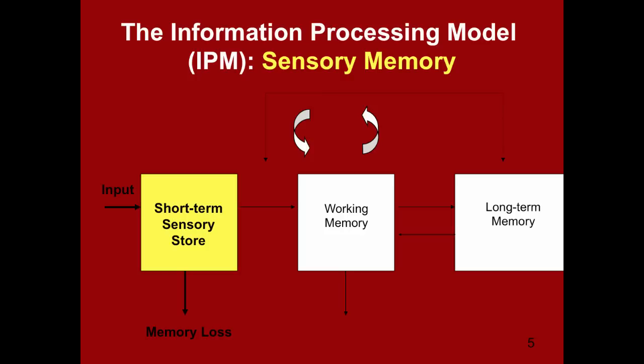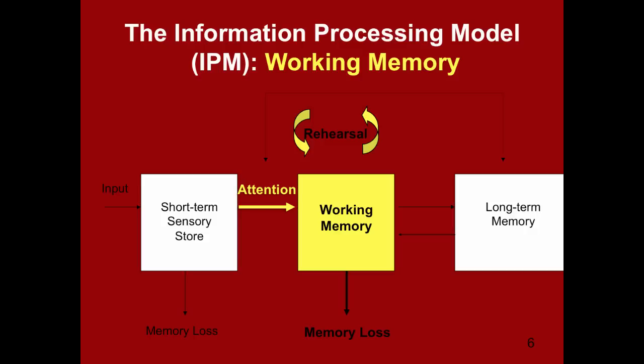Although most of the information that comes through the short-term sensory store is lost, some information does get pushed into working memory. How does this occur? Think about the things you were consciously thinking about as you were walking through campus — maybe you were listening to music or having a conversation with a friend. These things did enter your working memory. Now pay attention — literally. We need to pay attention in order to move things from our short-term sensory store into our working memory. Maybe somebody was wearing the same USC t-shirt as you, or someone you met previously at a Welcome Week event — this probably caught your attention and brought the information into your working memory, which is really our consciousness.